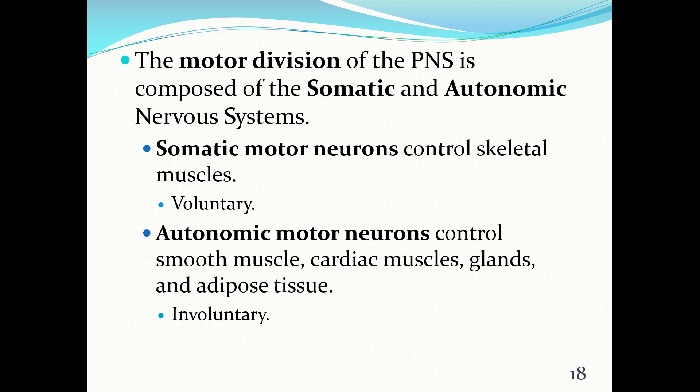Now let's look at the motor division, somatic in particular — we'll look at autonomic in the next chapter. Somatic motor neurons control your skeletal muscles and are voluntary. Autonomic motor neurons control smooth muscle, cardiac muscle, glands, and adipose tissue, and are involuntary and subconscious — you're generally not aware of them. Think of the autonomic system like autopilot: like an automatic transmission, the gears shift without you being aware of it.